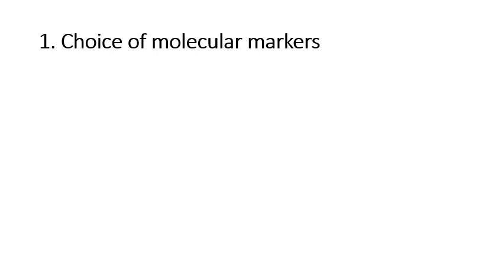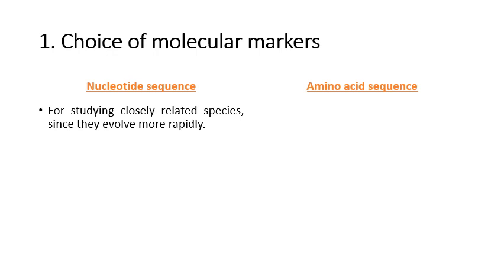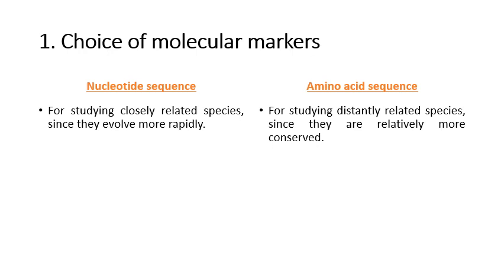The choice of correct molecular markers is the first crucial step in constructing a phylogenetic tree that is biologically correct. The choice of molecular marker depends upon the properties of the sequence and the purpose of your study. You can use either nucleotide sequences or amino acid sequences. For studying closely related species — for example, if you want to study evolutionary analysis of different individuals within a population — you can use nucleotide sequences because they evolve more rapidly. But if you are studying distantly related species, it's better to use amino acid sequences because they are relatively more conserved.